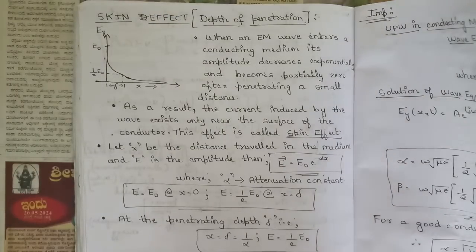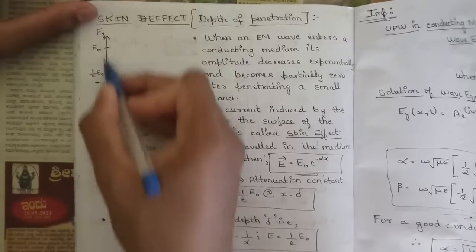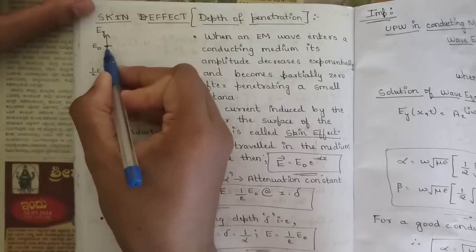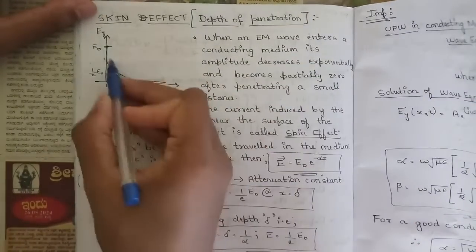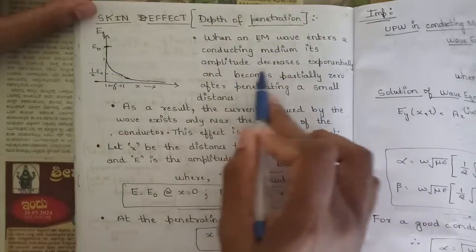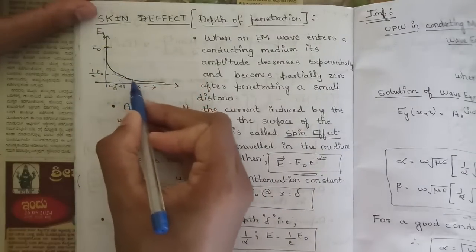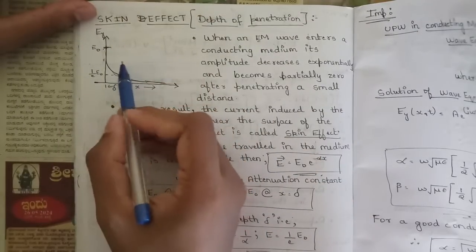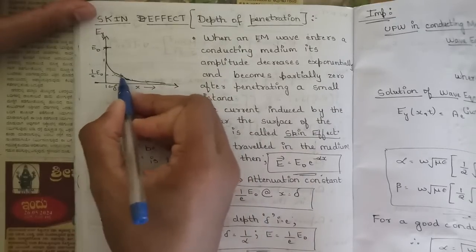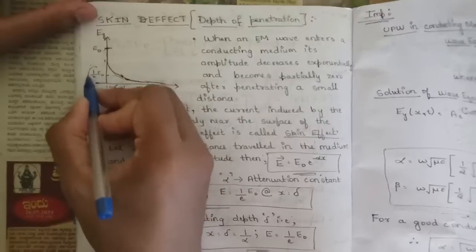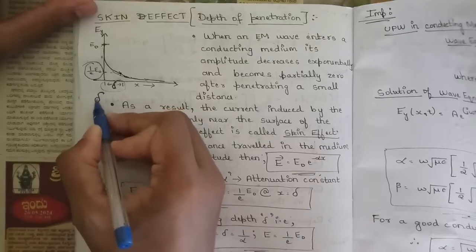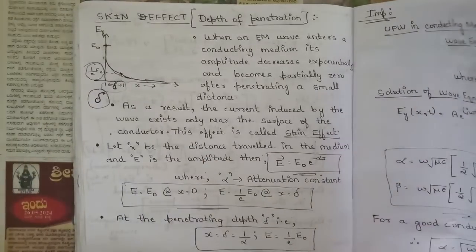Let's analyze this figure. The electric field is in the y-direction, that is Ey. The EM wave enters the conducting medium and its amplitude decreases exponentially, partially becoming zero. The point where the amplitude diverges from the axis — that is, where it reaches 1/e times the original value — and the length up to that point is called the depth of penetration, represented by delta (δ).